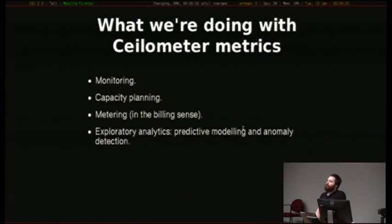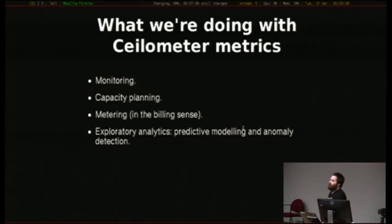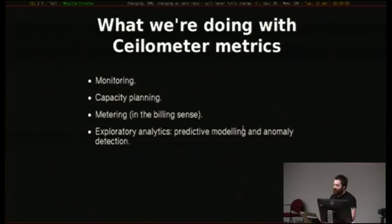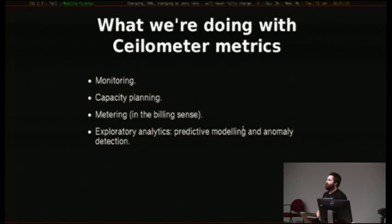In terms of what we're actually doing and why none of the default solutions really worked for us: the Ceilometer data we're using for monitoring, capacity planning — we'd like to take time series of resource usage and project where it's going to be in the future because that's how we buy kit — metering in the billing sense, generating invoices for customers, and exploratory analytics, where we're playing with anomaly detection and predictive modeling. This last one adds some fun requirements with respect to historical data.